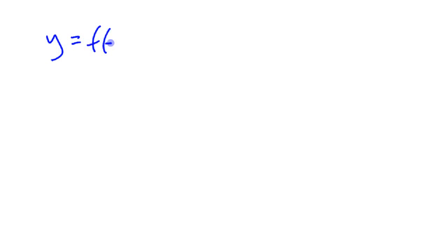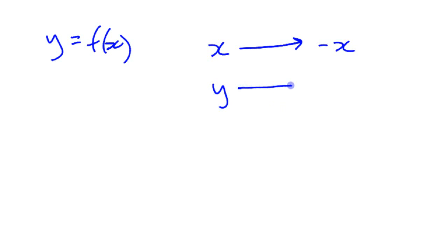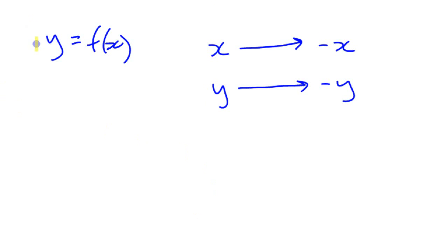The next thing we look at in this transformations unit is what happens when you make a couple of different types of changes to whatever function you want. F of x could be anything. The changes we're talking about making are: changing x to negative x, and later on changing y to negative y. We're going to start with the change to x.